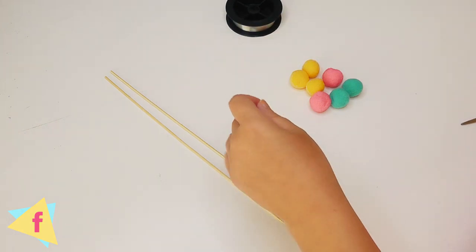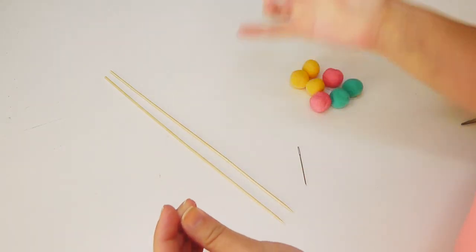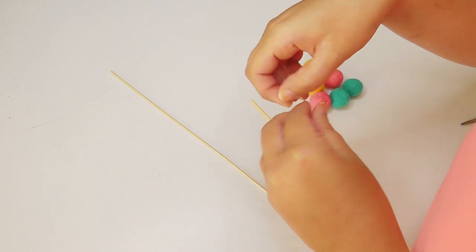Firstly, you want to take a length of fishing line and tie it in a knot around one of the kebab sticks. You'll need to knot it two or three times.